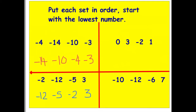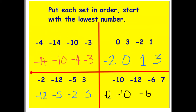I'd like you to sort the last two sets — remember to start with the lowest number first. Pause the video, then come back to check. For the top right set, the lowest is minus two or negative two, then zero, one, and three. For the final set, the furthest from zero is minus twelve, then negative ten, negative six, and then seven.